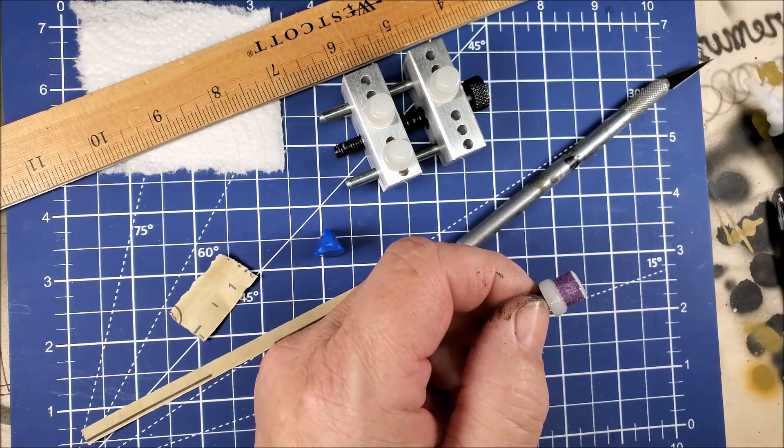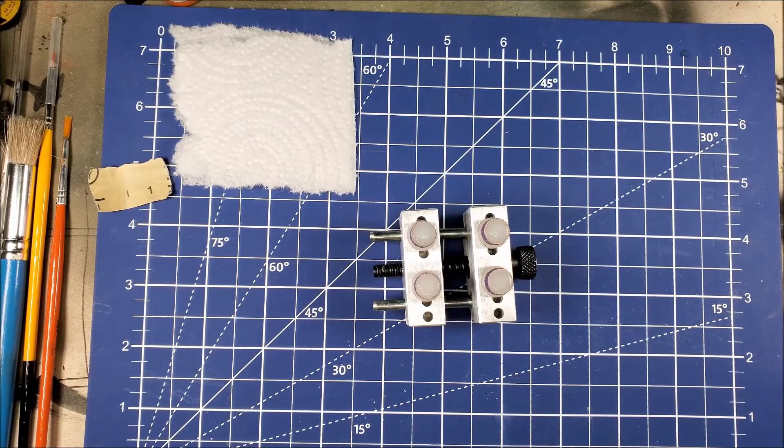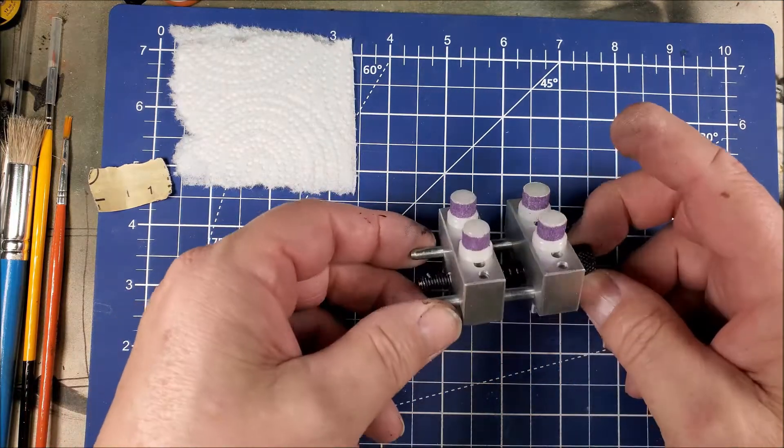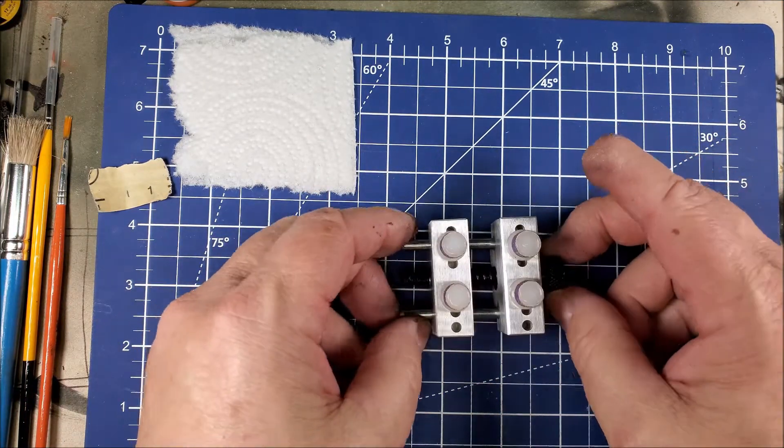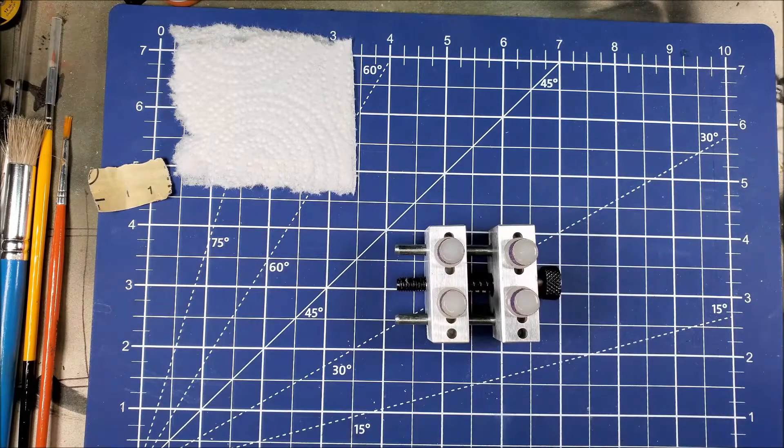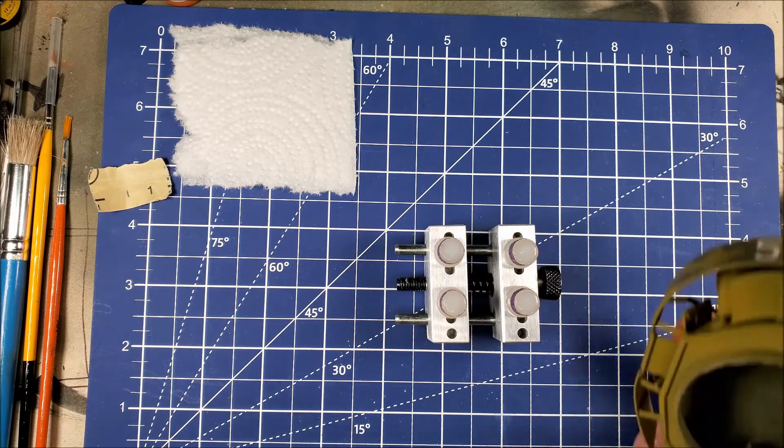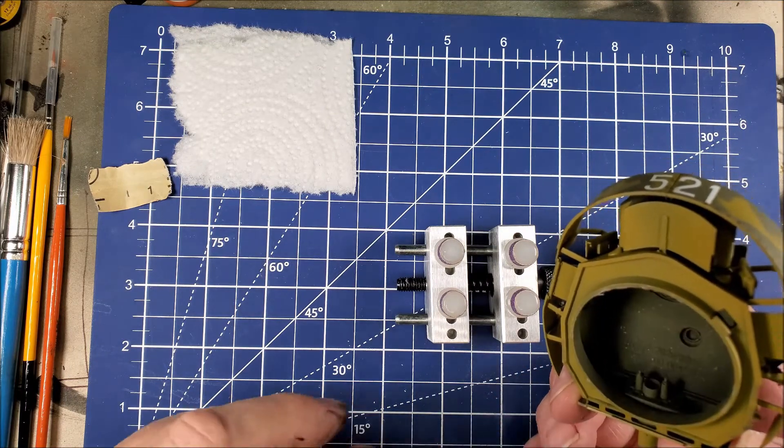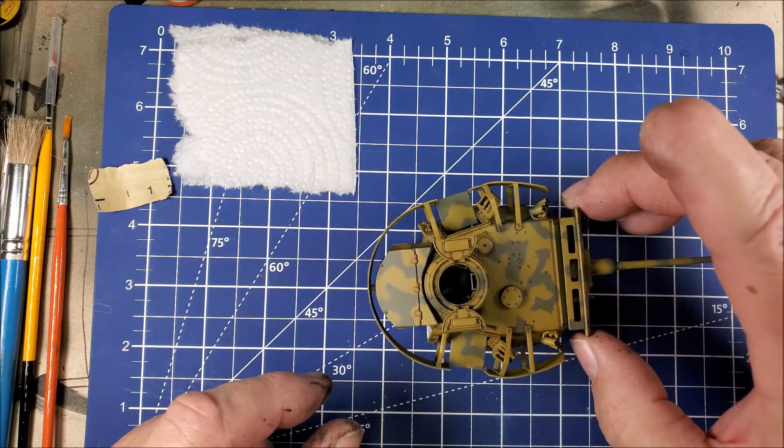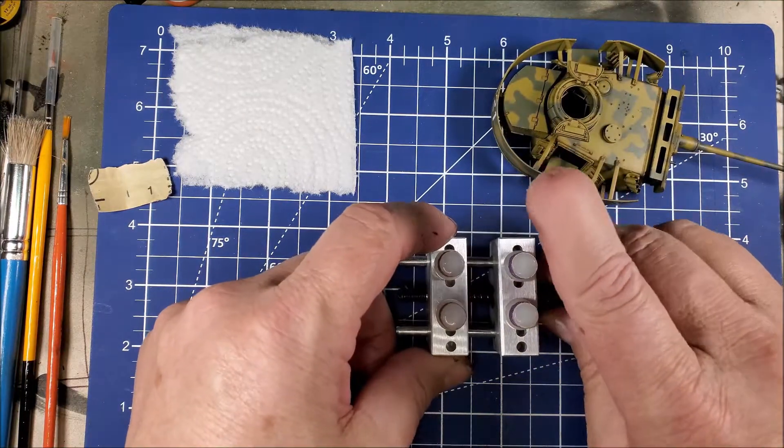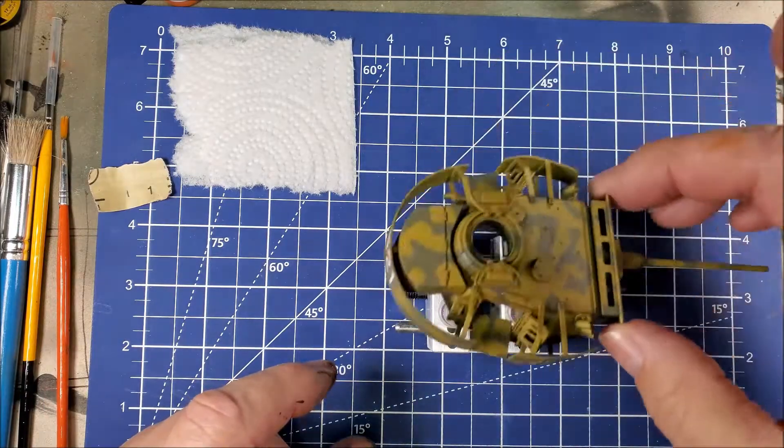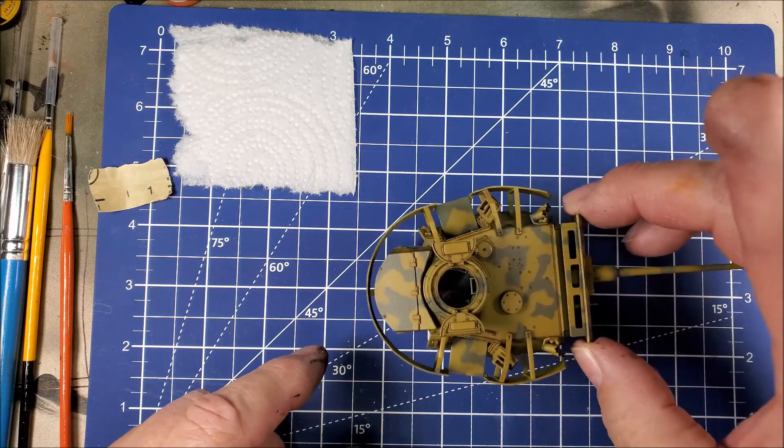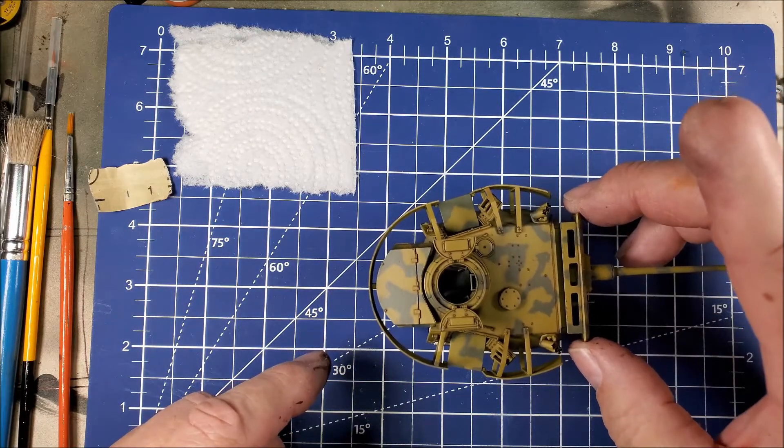All right, I have the sandpaper on my posts and let's see how it works. So I'm going to put the posts—they'll fit inside the turret ring and should grip it. Close it up just a little bit. All right.